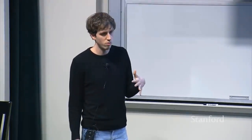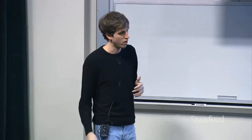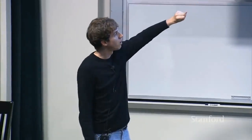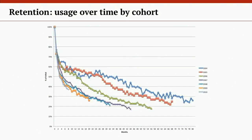You measure all these cohorts and you can track them — this tells you what's happening to users over time. This is a graph of total cohort usage for a relatively old internet product. The blue line is users who joined this product in 2004. The y-axis is what percent of them are still using it and the x-axis is time. You can see basically every month there are fewer and fewer people that joined in 2004 that are still using it, and this is basically the same story for all the different cohort lines.